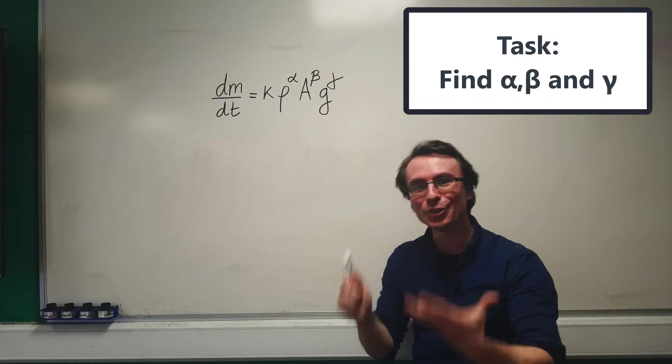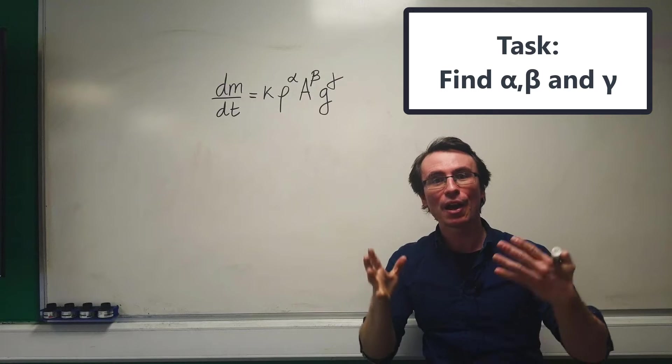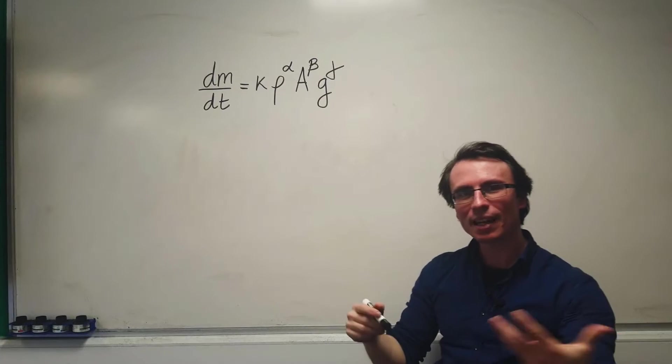We can use dimensional analysis to determine what alpha, beta, and gamma are. Let's have a go.